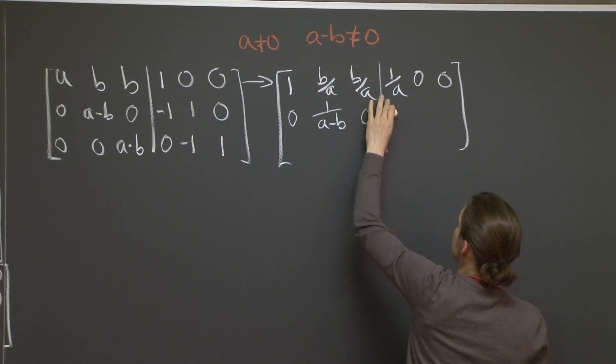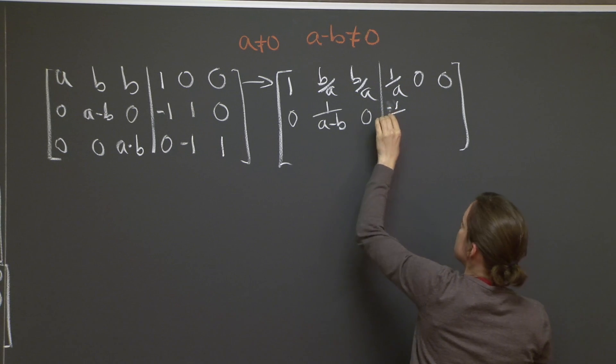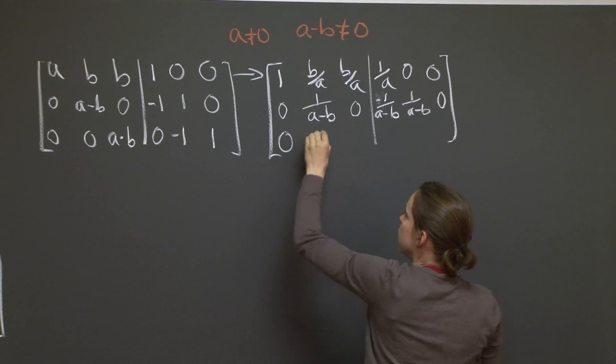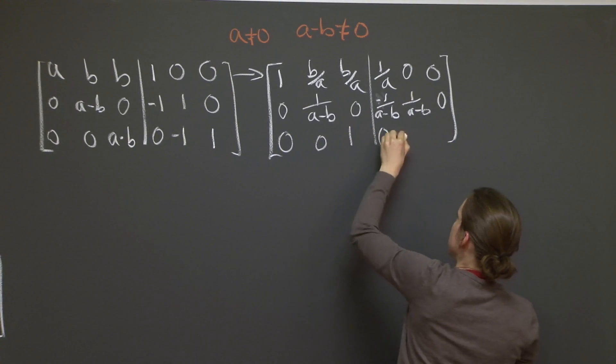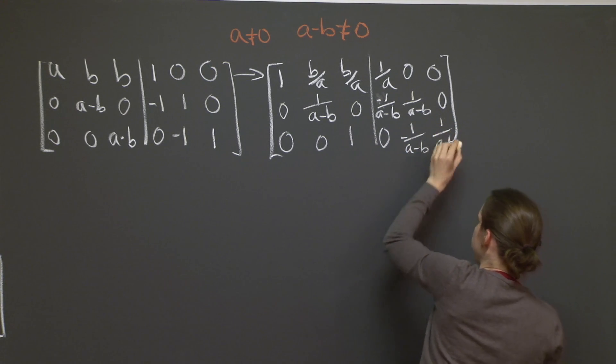0, minus 1 over a minus b, 1 over a minus b, 0, 0, 0, 1, 0. Minus 1 over a minus b, 1 over a minus b.